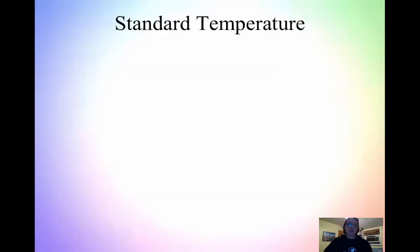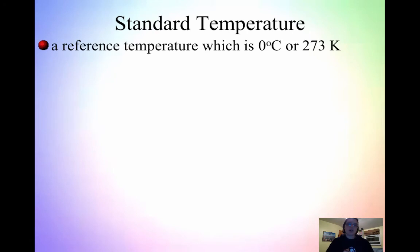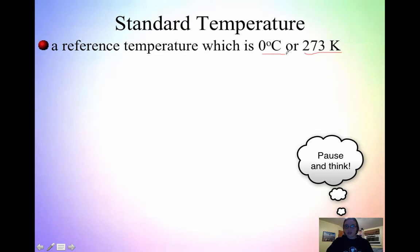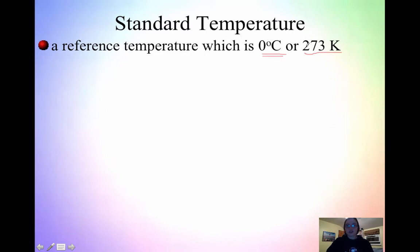Now that we've talked about pressure, to get into gas laws we're going to look at standard temperature. Standard temperature is just a reference temperature, which is 0 degrees Celsius or 273 Kelvin. When we look at gas laws, we use Kelvin and not Celsius — Kelvin has no negative numbers, and at zero Kelvin all movement stops. So we use Kelvin in all of our gas law problems. Standard temperature is either 0 degrees Celsius or 273 Kelvin.